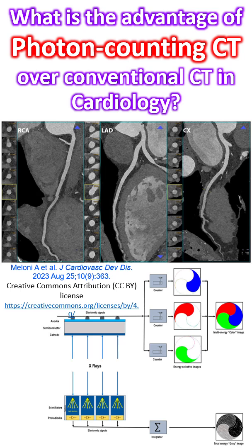Photon counting computer tomography is a relatively new technology which has several advantages in cardiovascular imaging. Some of the disadvantages of conventional energy integrating detector CT are taken care of by photon counting CT. The role of ultra high spatial resolution photon counting CT in coronary artery disease and in imaging prior to transcatheter aortic valve replacement have been mentioned earlier.